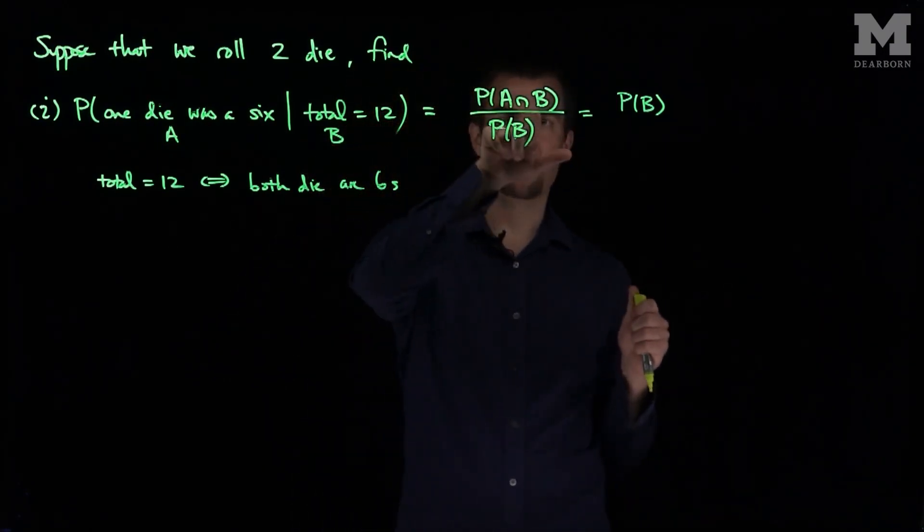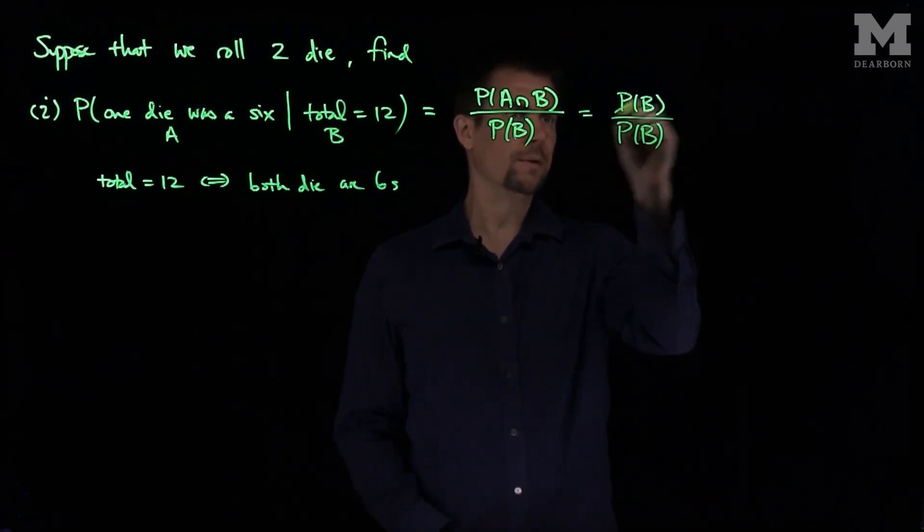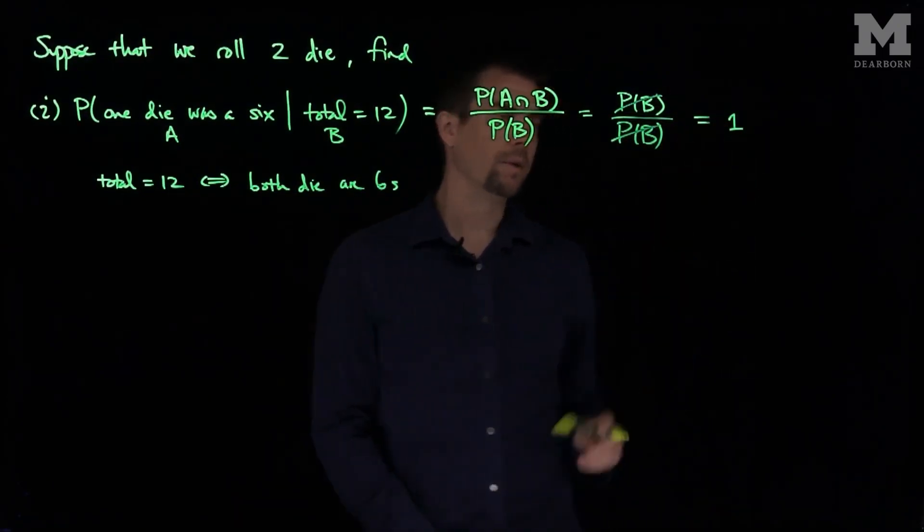Divided by the probability of B, and those cancel, and we get a probability of 1.